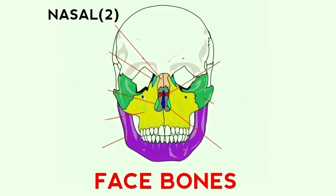Now moving to the face bones. The nasal bones — there are two bones arranged in the face called nasal. These are small bones which form the upper part of the bridge of the nose. As you can see in the figure, the nasal bone is denoted with the color of skin and there are two in quantity. The next bone is the maxillary. These are also two in quantity. Maxillary bones are present in the upper jaw.